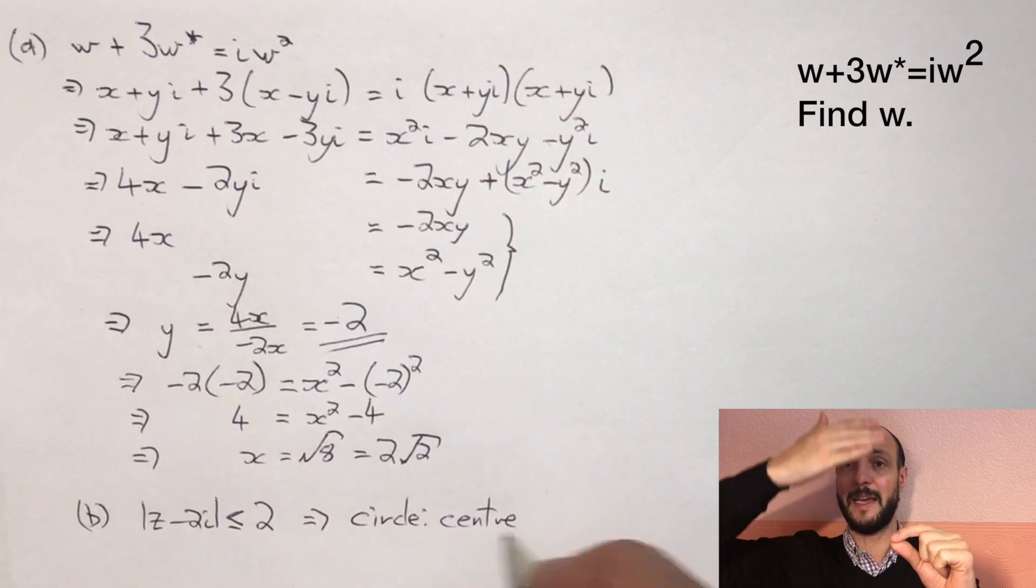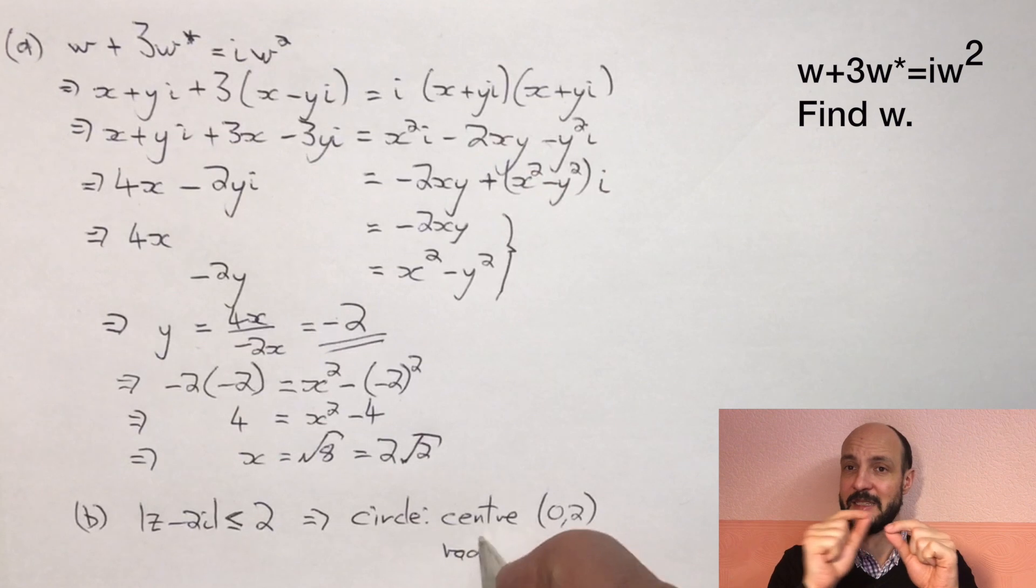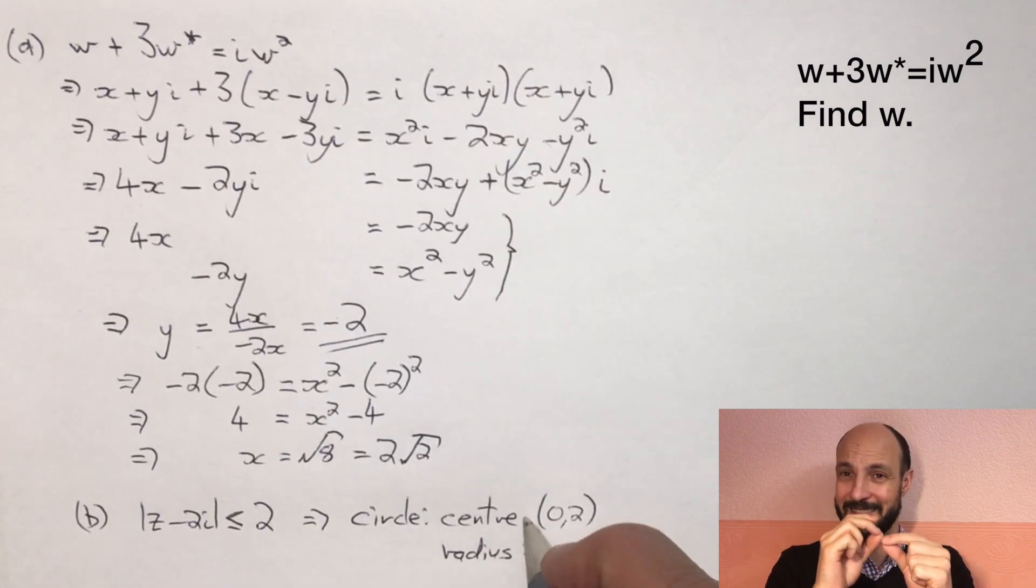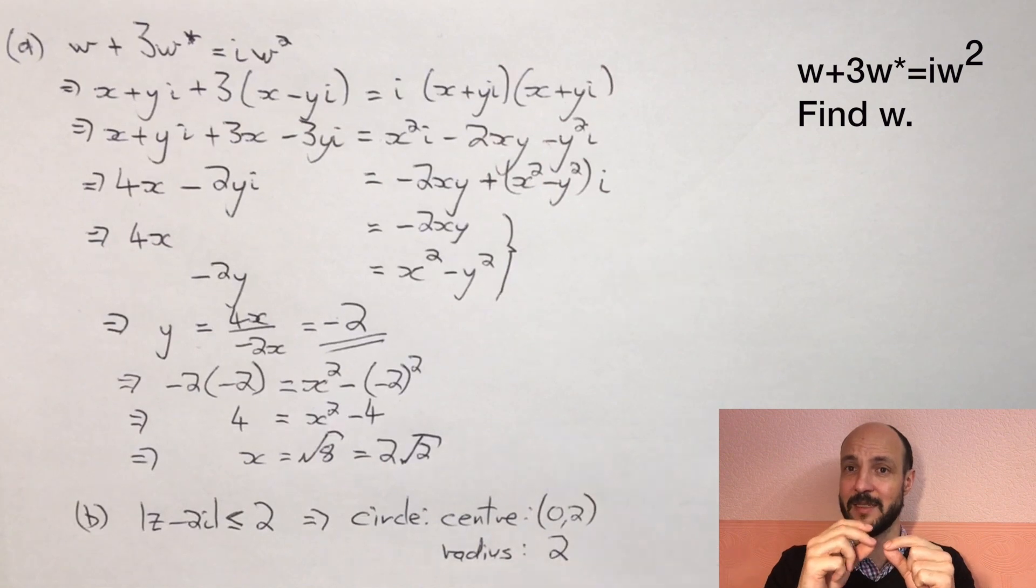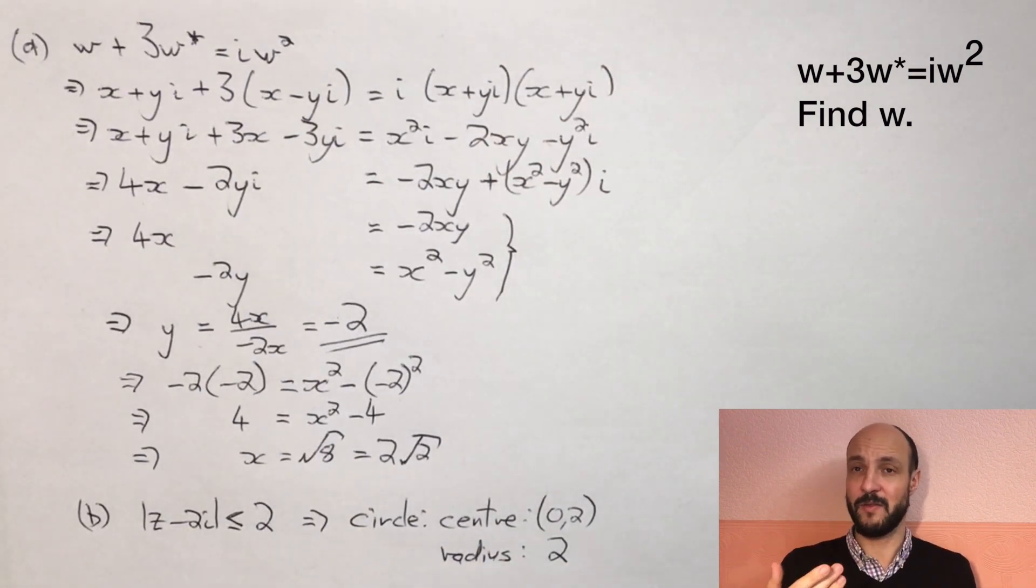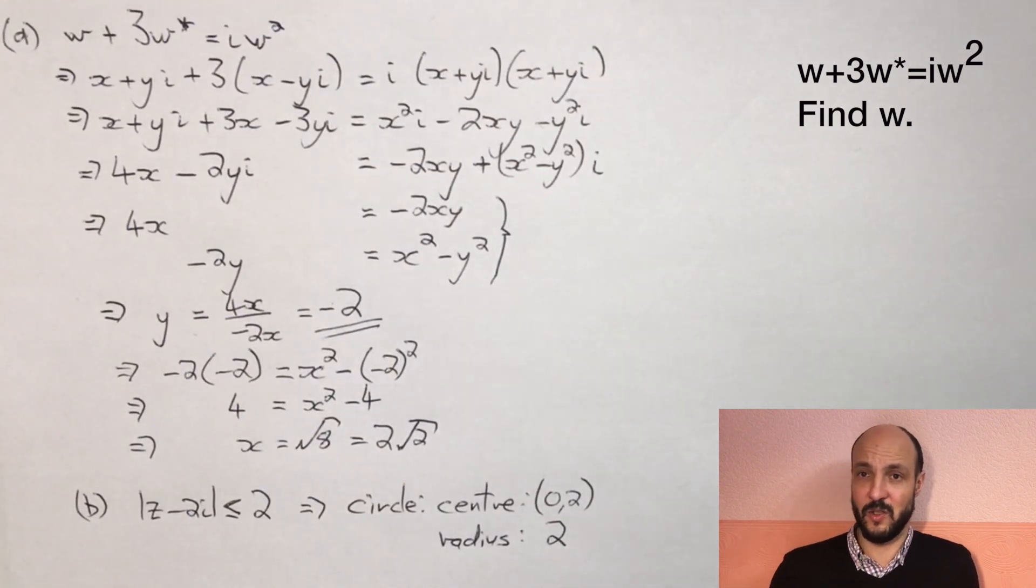If it were three dimensions it would be a sphere, but in two dimensions it's a circle. And the distance is always less than or equal to 2, so the radius of our circle is 2. The center of the circle, we're saying the distance Z minus 2i, the distance from 2i. So the center of the circle is effectively the coordinate 0 comma 2 and it's a circle of radius 2.